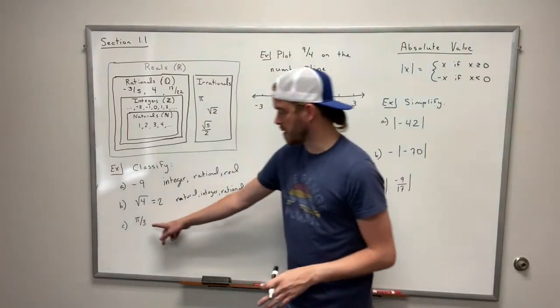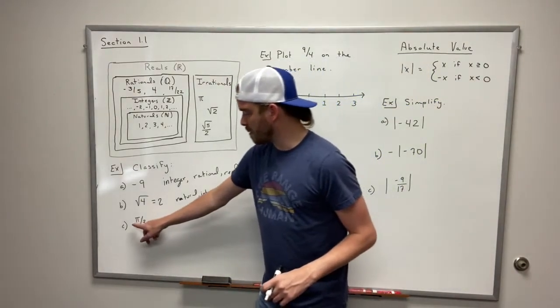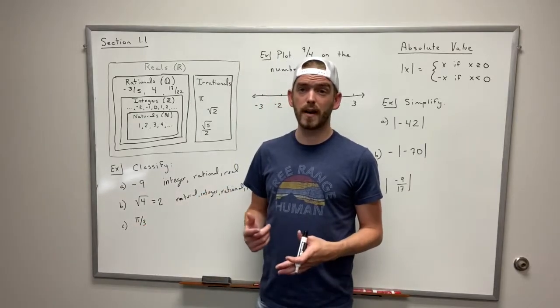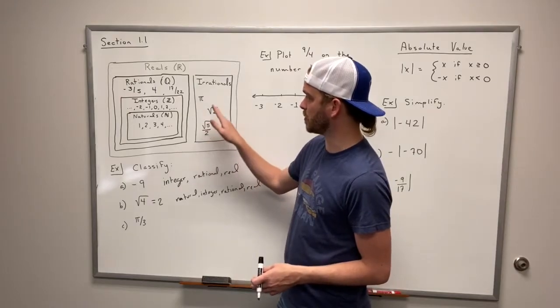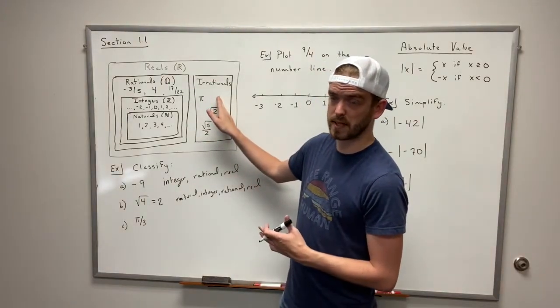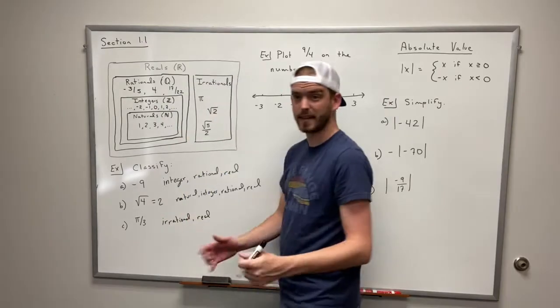We have one more example and that's pi over 3. Now as we mentioned earlier on, pi is irrational. Since pi is irrational even if it's in fraction form it's still going to be considered an irrational number. So this is the smallest subset that it can go in. So this one is irrational and real. That's our answer.